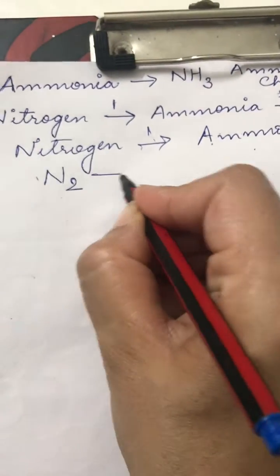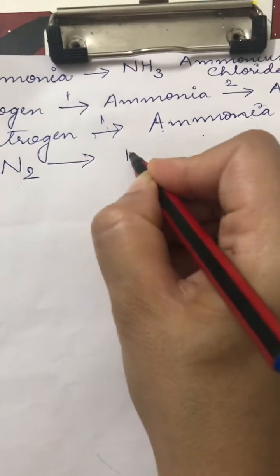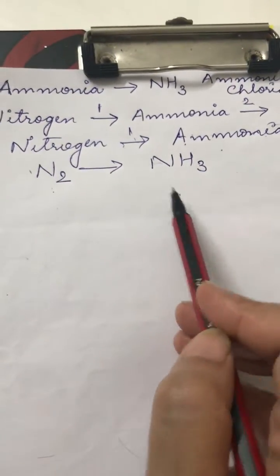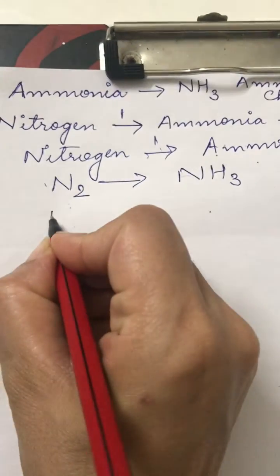So you first write it in this form: N2 to ammonia. The formula of ammonia is NH3, so we write NH3. So N2 to NH3. This is our requirement. How do we do that?